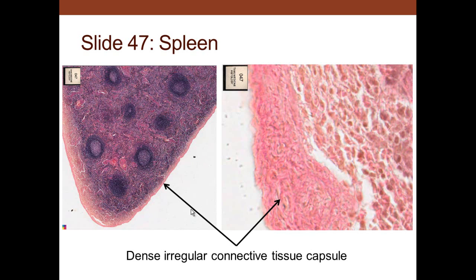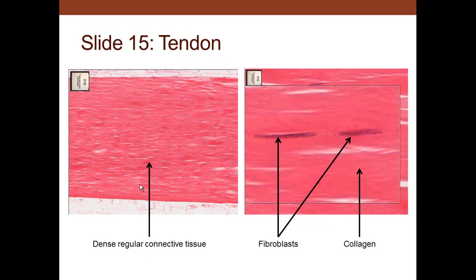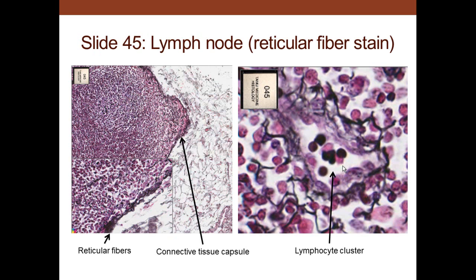The spleen capsule is an example of dense irregular connective tissue—collagen fibers not regularly arranged—because the capsule must resist pressure from different directions. In contrast, tendons are dense regular connective tissue because stress is applied in only one direction. In tendons we see fibroblast nuclei and bundles of collagen aligned regularly—few cells, lots of fibers, all oriented with the tendon.